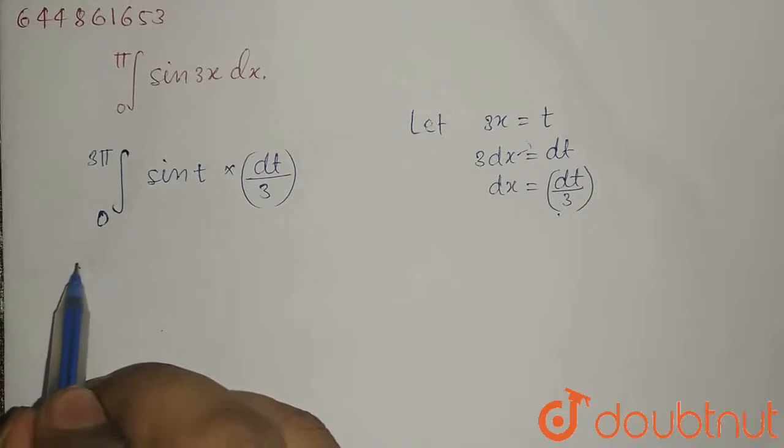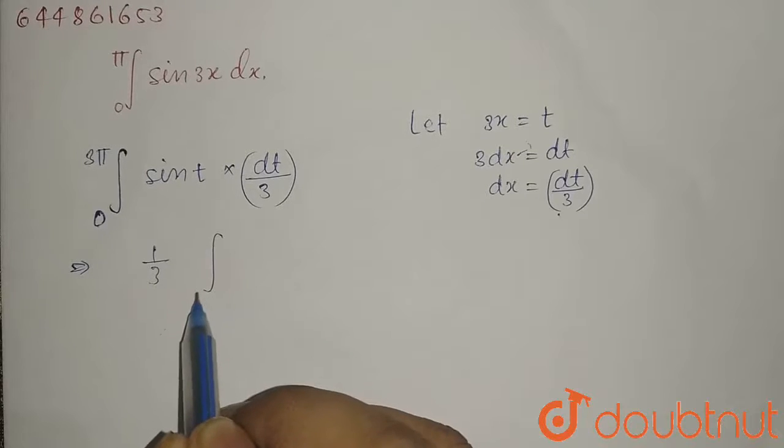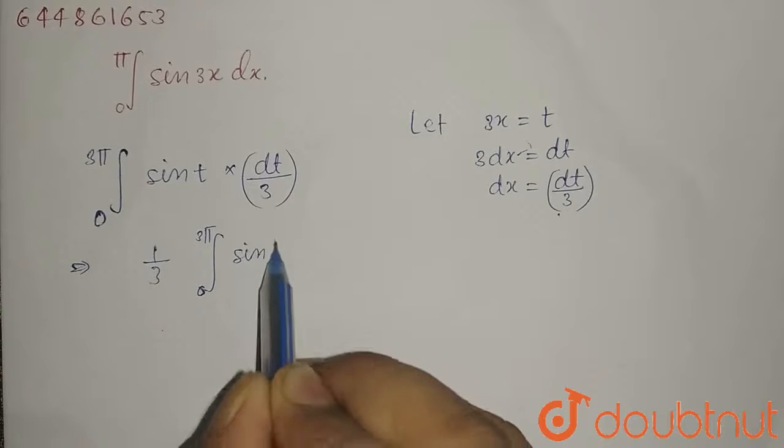So this integral equals 1 over 3, integral from 0 to 3pi of sin t dt.